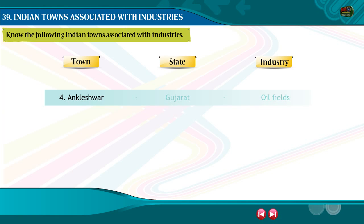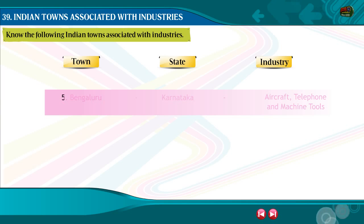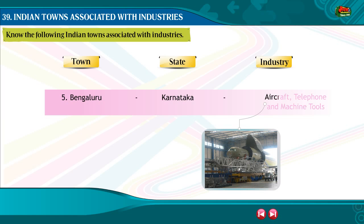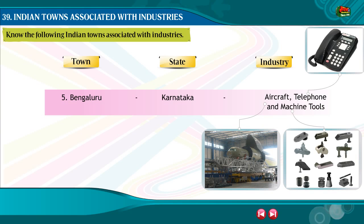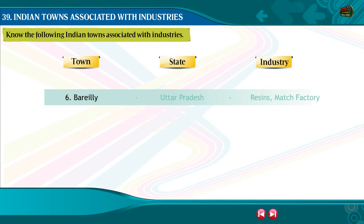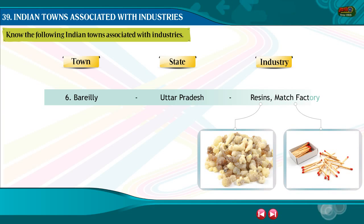4. Ankleshwar, Gujarat — Oil Fields. 5. Bengaluru, Karnataka — Aircraft, Telephone and Machine Tools. 6. Bareilly, Uttar Pradesh — Resins, Match Factory.